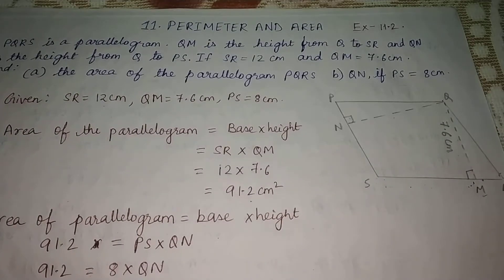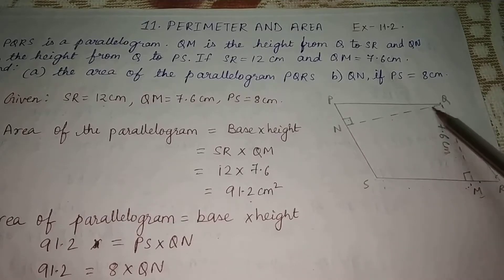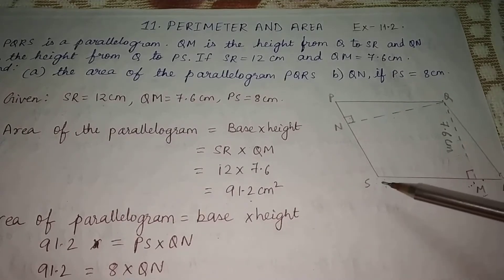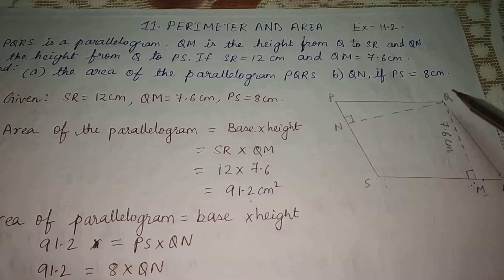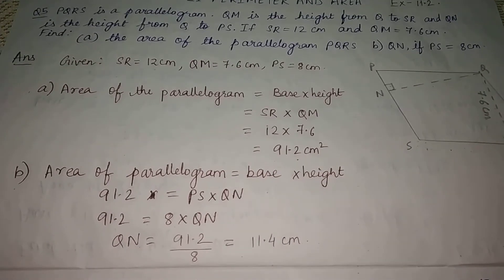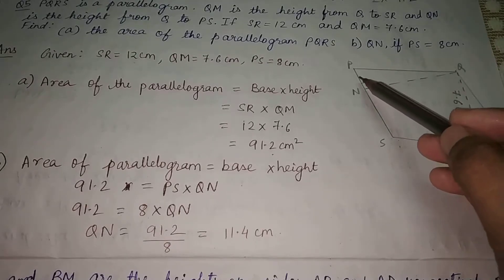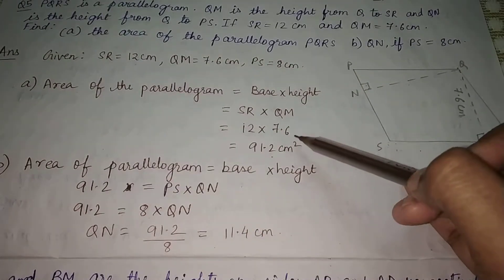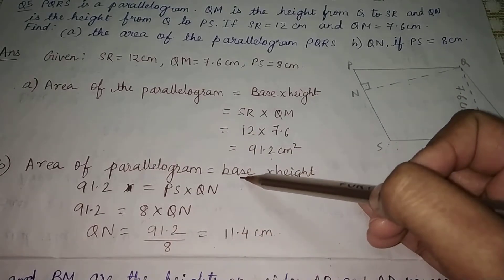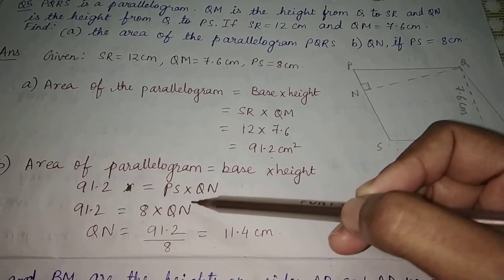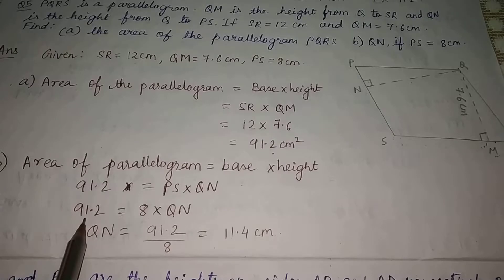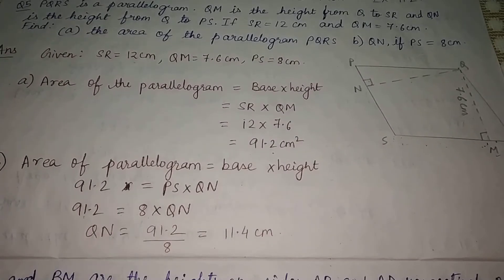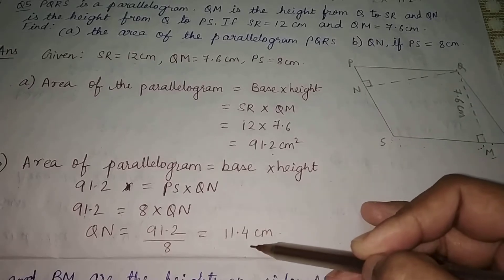Now we use this area to find the next part — the height QN when PS equals 8 cm. We apply: area of parallelogram equals base times height, taking base as PS and height as QN. Area is 91.2, base PS is 8, so QN equals 91.2 divided by 8, which gives 11.4 cm.